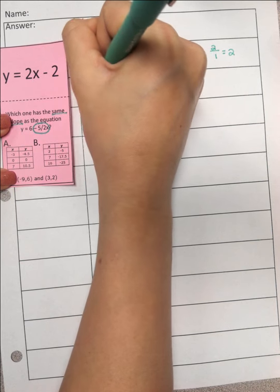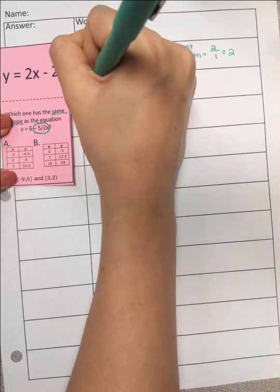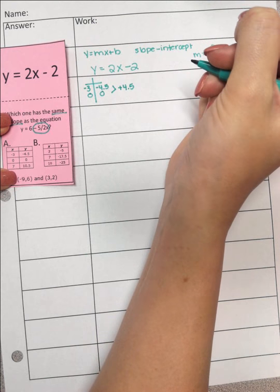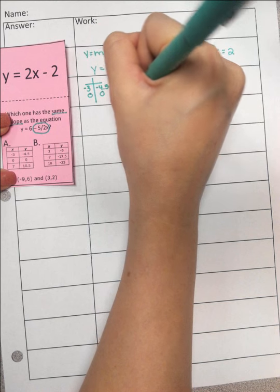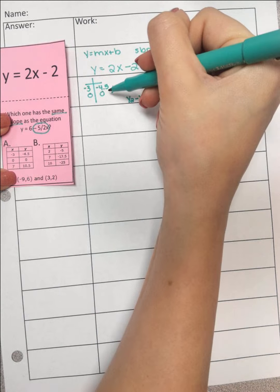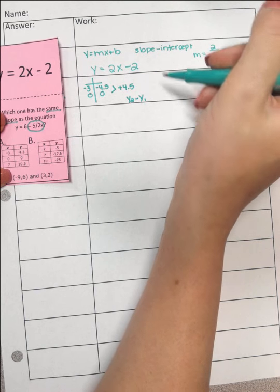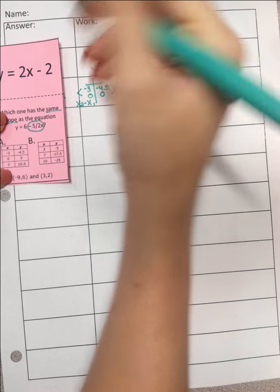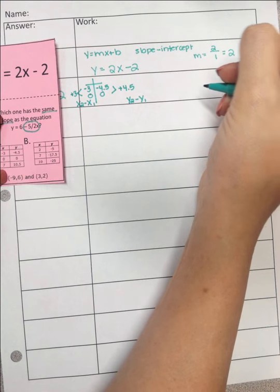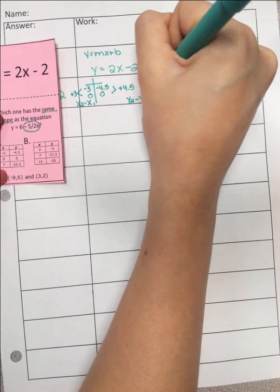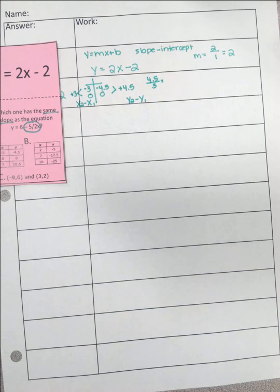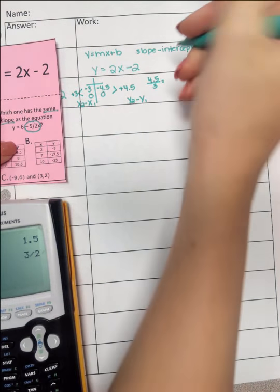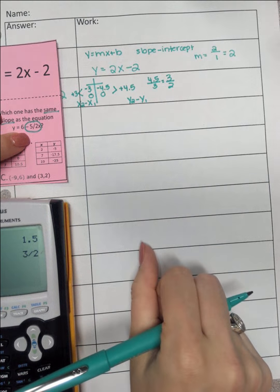So I'm going to take my first example. I've got negative 3, negative 4.5, and then 0, 0. So to get from here to here, I'm going up 4.5. If you're not good at mental math, you can take y2 minus y1, so 0 minus a negative 4.5 which is 4.5. And then here I could take x2 minus x1, so 0 minus a negative 3 is a positive 3. So the y goes on top, so 4.5 over 3. Plug that in my calculator, math, enter, enter. It gets me 3 halves. That does not match my negative 5 over 2. So I'm going to try the next one.